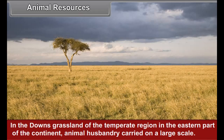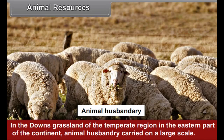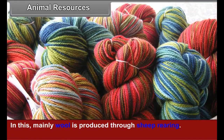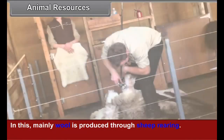In the downland grasslands of the temperate region in the eastern part of the continent, animal husbandry is carried on on a large scale. Mainly wool is produced through sheep rearing.